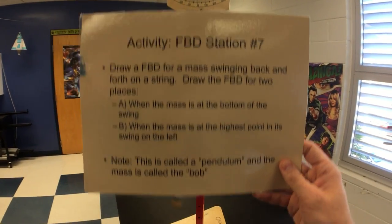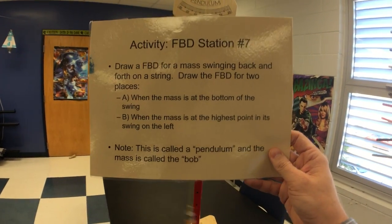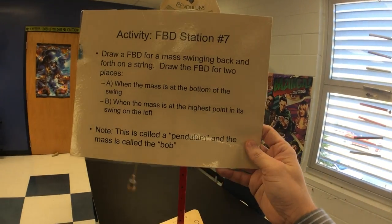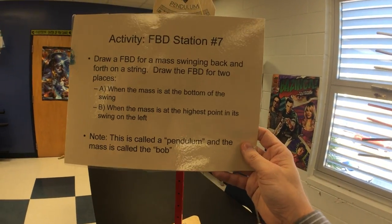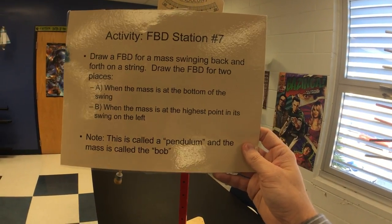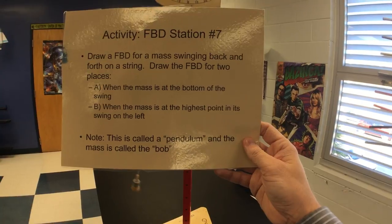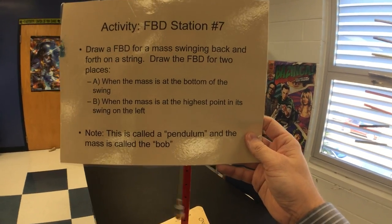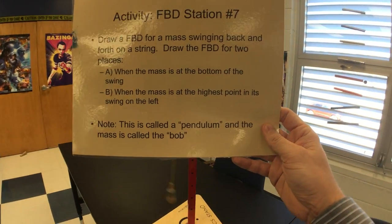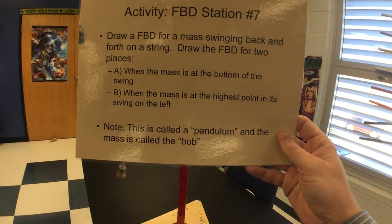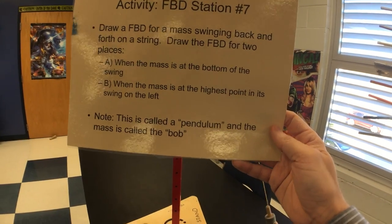Draw a free body diagram for a mass swinging back and forth on a string. Draw the free body diagram for two places: A, when the mass is at the bottom of the swing; B, when the mass is at the highest point in its swing on the left.